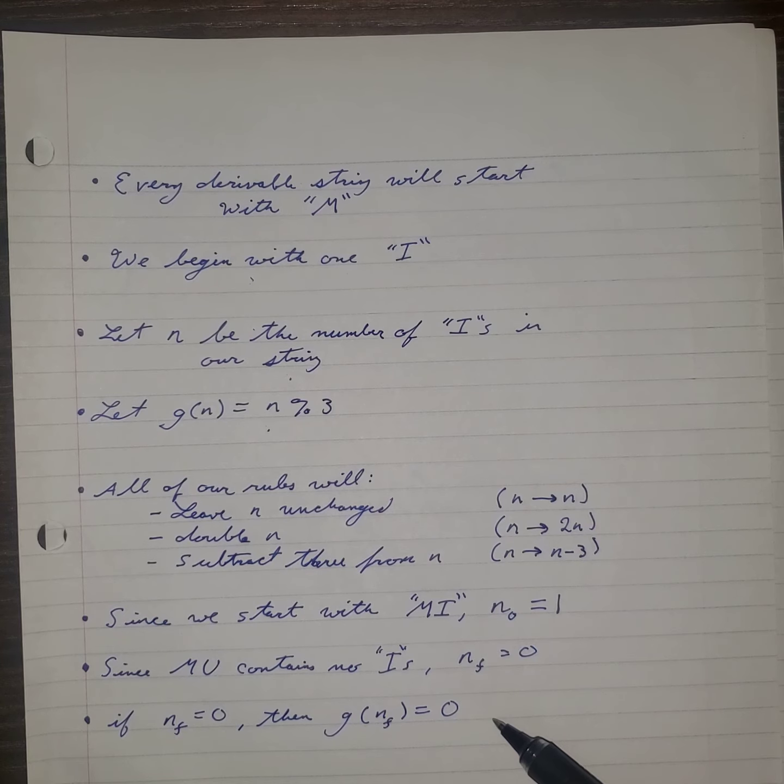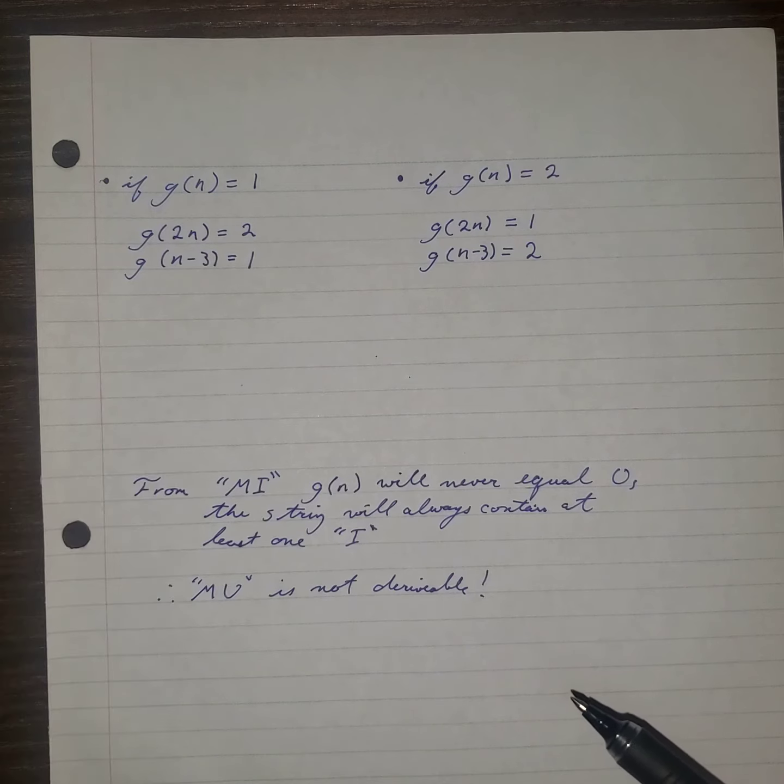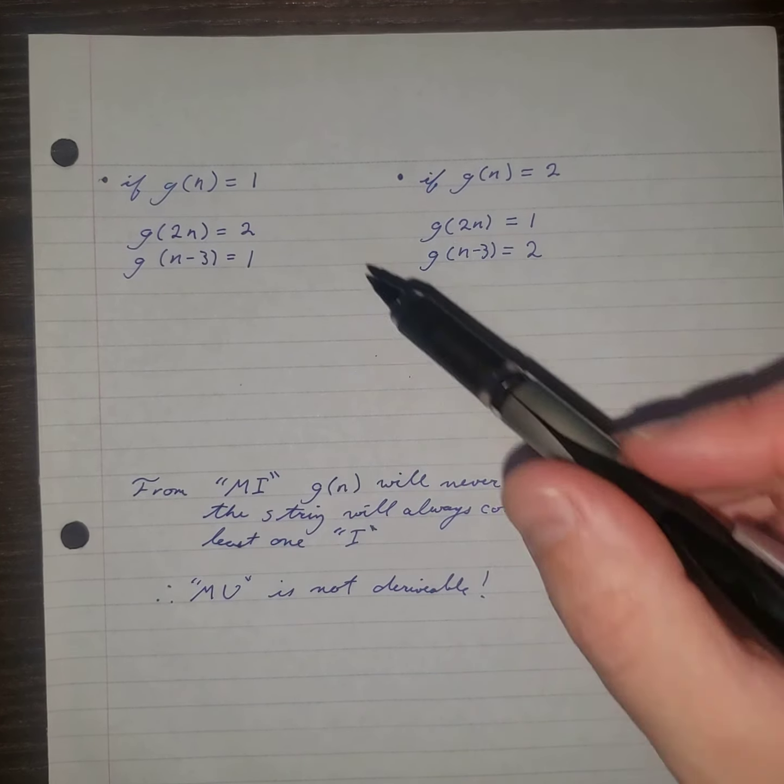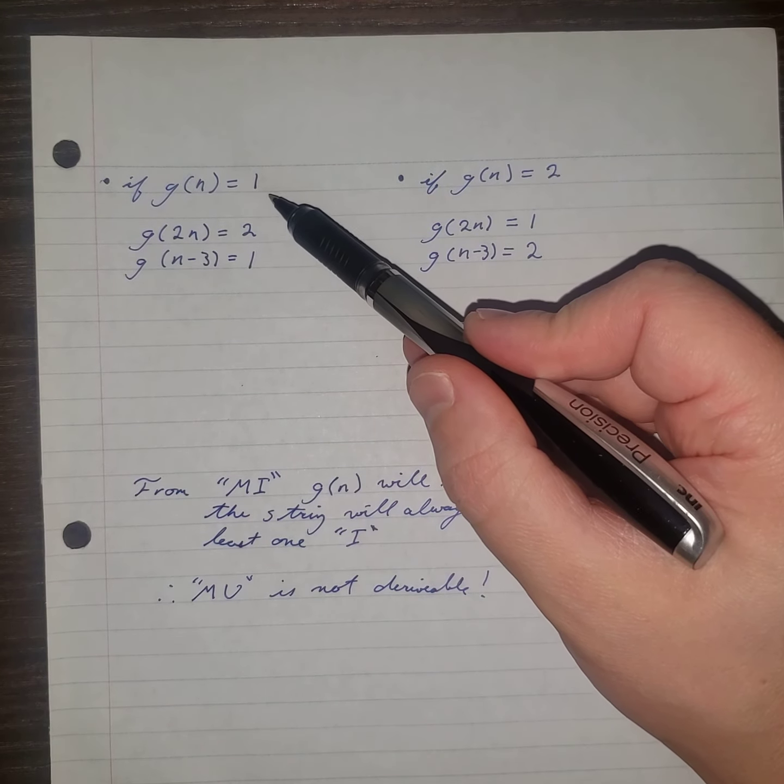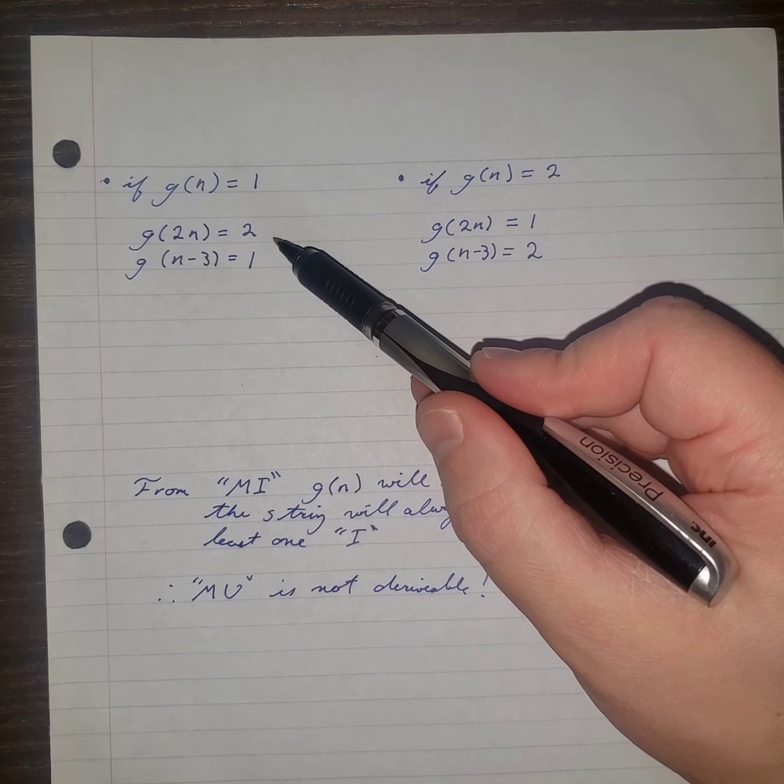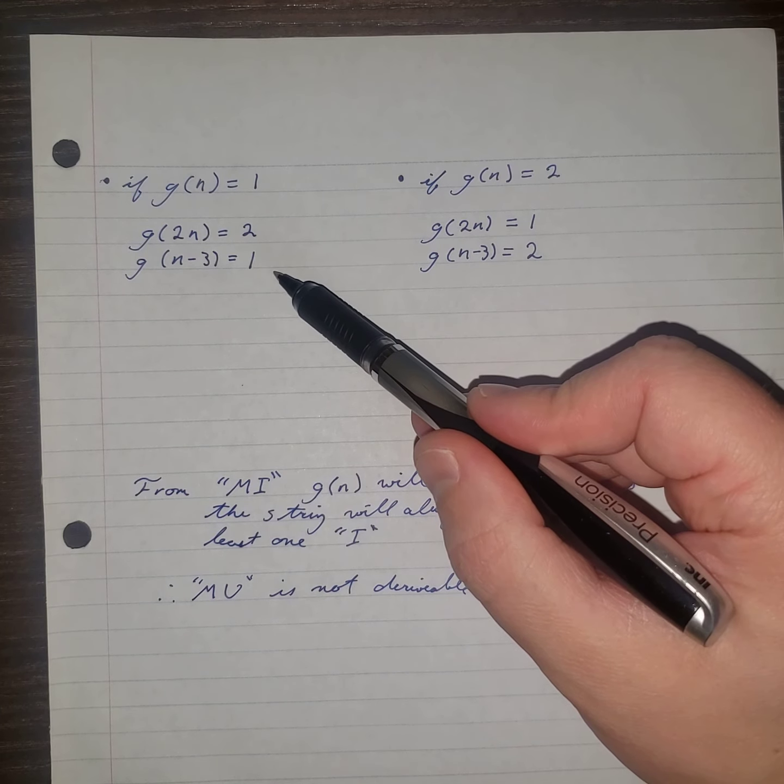Note, if Nf equals 0, then G of Nf also equals 0. If G of N equals 1, then G of 2N equals 2, and G of N minus 3 equals 2.